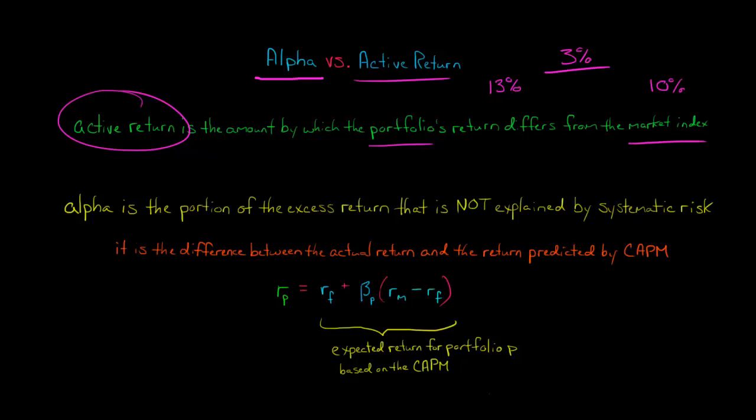However, this return does not account for the systematic risk of that portfolio. And that's where alpha comes into play. Alpha is a risk-adjusted measure of return. Alpha is the difference between the actual return of the portfolio and the return predicted by the capital asset pricing model.